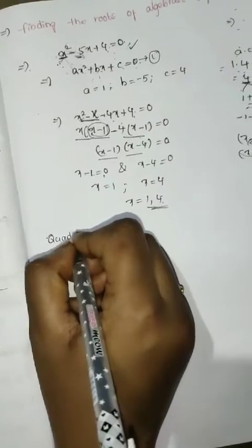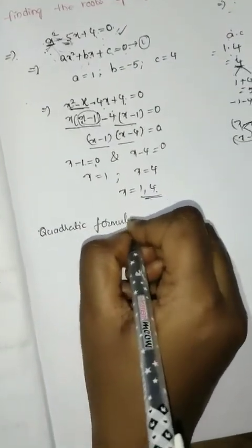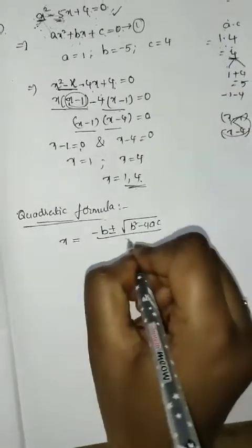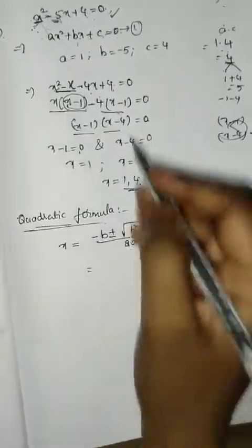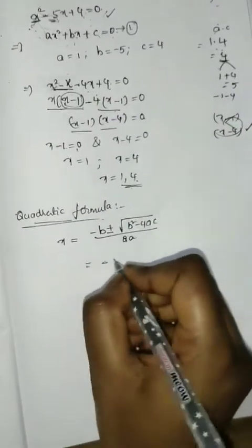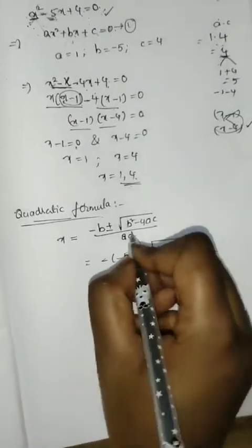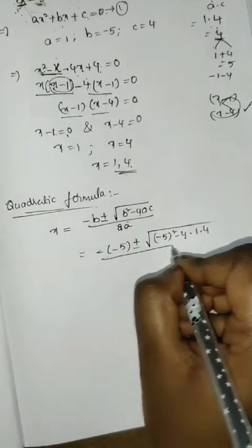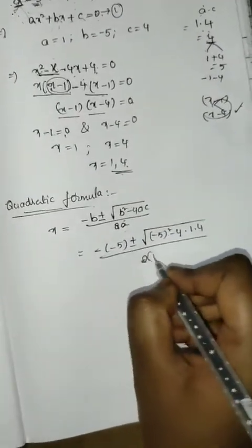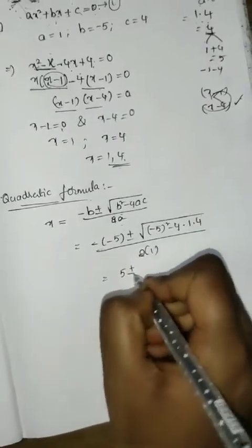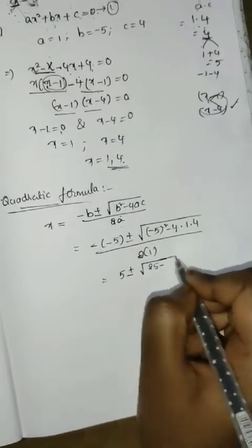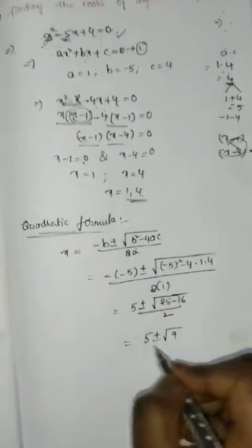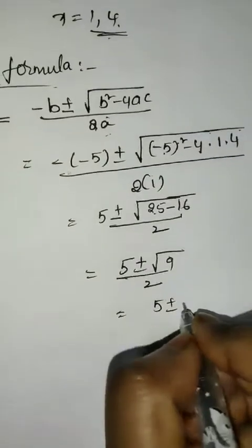Next, by using the quadratic formula method: x equals minus b plus or minus root of b squared minus 4ac, all divided by 2a. Substituting the values: x equals minus of minus 5, plus or minus under root of minus 5 whole squared minus 4 into 1 into 4, divided by 2 into 1. This gives 5 plus or minus root of 25 minus 16, which is root 9, divided by 2. So x equals 5 plus or minus 3, all divided by 2.